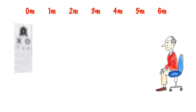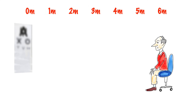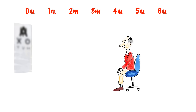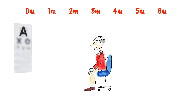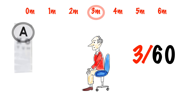But what if they can't even see the top line? Move the patient progressively closer to the chart until they can see the top line. We express the VA on the same principle — the distance from the chart over the lowest line read. So if the patient at three metres can only read the top line of a six-metre chart, it will be expressed as 3/60.